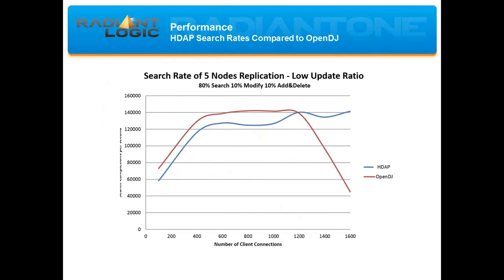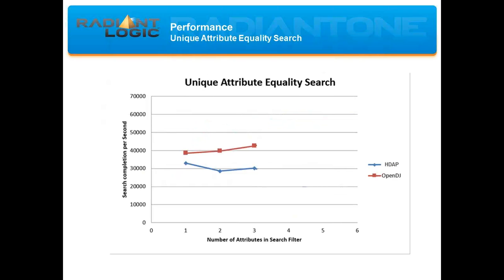This graph shows the result of load balancing across five nodes — five HDAP nodes compared to five OpenDJ servers. You can see the same result as in the previous slide: when you increase the load and clients are performing even a small amount of write operations in parallel with search operations, the performance of traditional LDAP directories starts to drop dramatically.